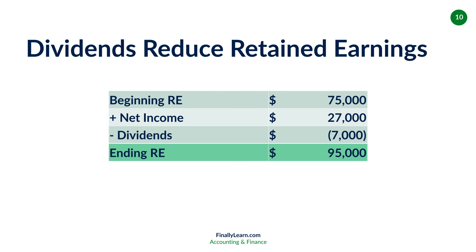Dividends reduce retained earnings. So we have beginning retained earnings of $75,000. Net income would increase retained earnings. Dividends would decrease retained earnings. And our ending retained earnings is $95,000.